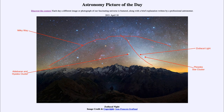The zodiacal light does not pass through Orion because Orion is not one of the constellations of the zodiac — it is not close enough to the plane of our solar system. However, it does pass very close to other stars, including through the constellation of Taurus, which is one of the zodiacal constellations.